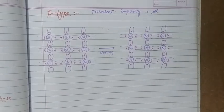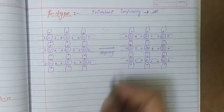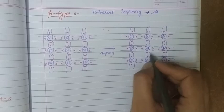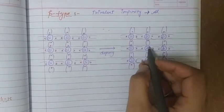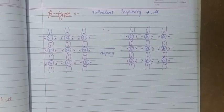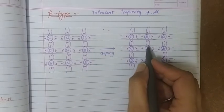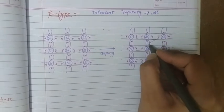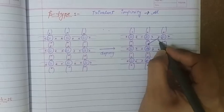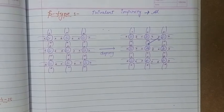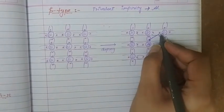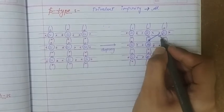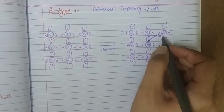When we dope silicon with trivalent impurity aluminium, aluminium has only three valence electrons, so three of the four nearby silicon atoms form covalent bonds by sharing, while one bond remains incomplete — there is no electron to complete it. This creates a vacant space, and an electron from a nearby silicon-silicon bond slides into this space to form the bond, leaving a vacancy at its original place.